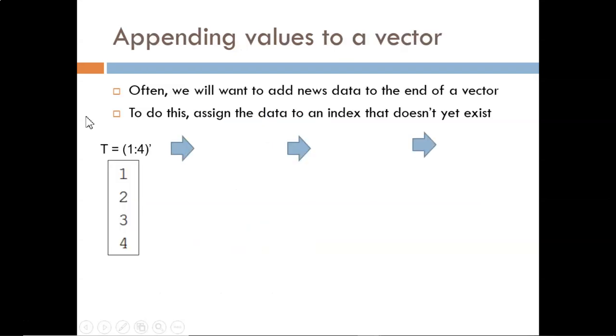Sometimes, we will want to assign values to an array in an index that doesn't exist yet. Let's call this appending values, or tacking them on the end. An example application is if you are running an experiment, and every time you get new data, you want to add it to a table of data. Let's see how this works in MATLAB with this example vector t. First, I create it as a column vector with the numbers 1 through 4. Clearly, this vector is 4 indices total.